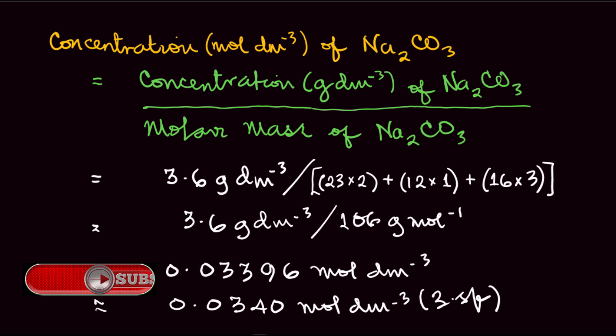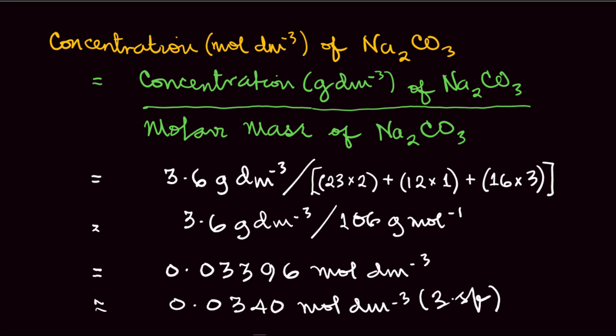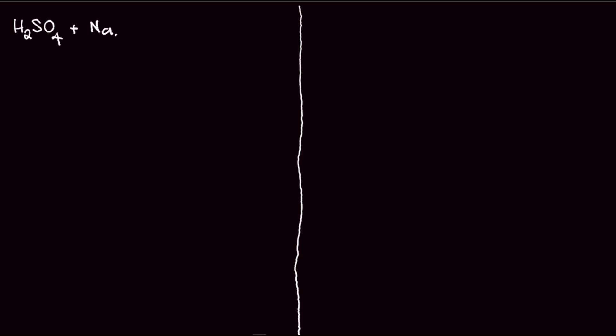Now that we have the concentrations of both the acid and base in mol/dm³, we use these to determine the expected volume of acid in the titration. The volume of the base is fixed using a pipette — in this case 25.00 cm³ — while the acid is in the burette. We write the equation of reaction: H2SO4 + Na2CO3 → Na2SO4 + CO2 + H2O. The equation is balanced, and the mole ratio of acid to base is 1:1.